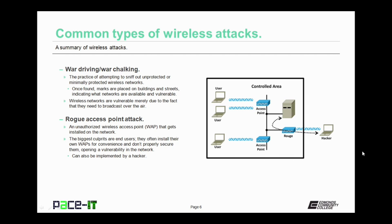Rogue access point attacks are when an unauthorized wireless access point, or WAP, gets installed on the network. The biggest culprit in the rogue access point attack are your own end users. They often install their own wireless access points for convenience and then don't properly secure them, opening a vulnerability in the network. But just because your own end users are the biggest culprits, don't think that it can't be implemented by a hacker.